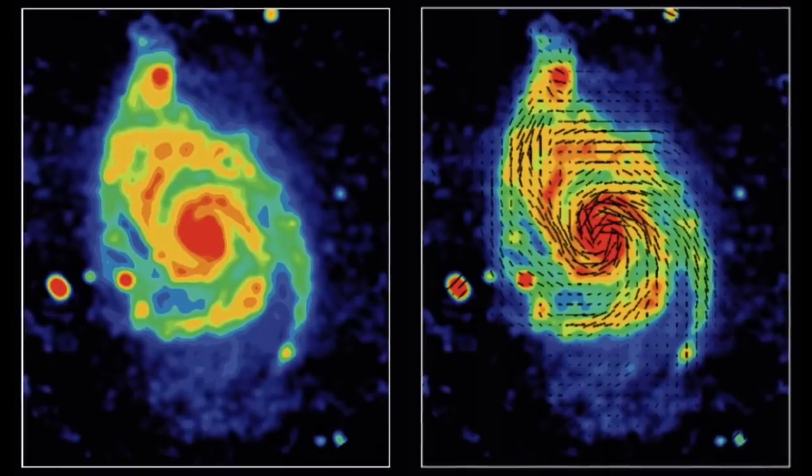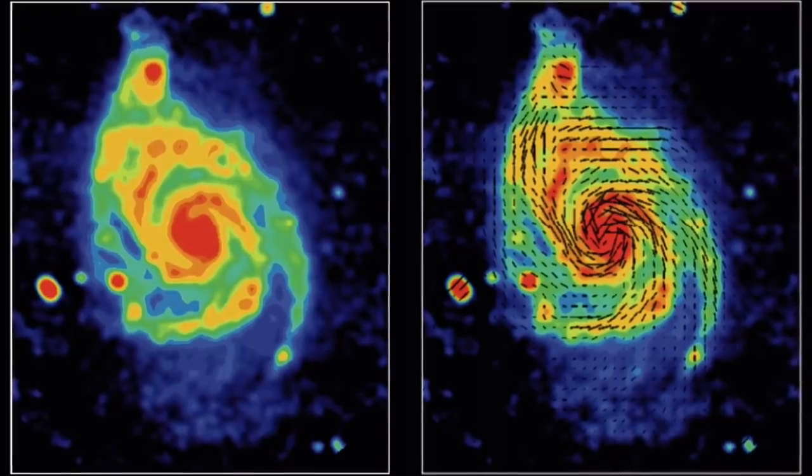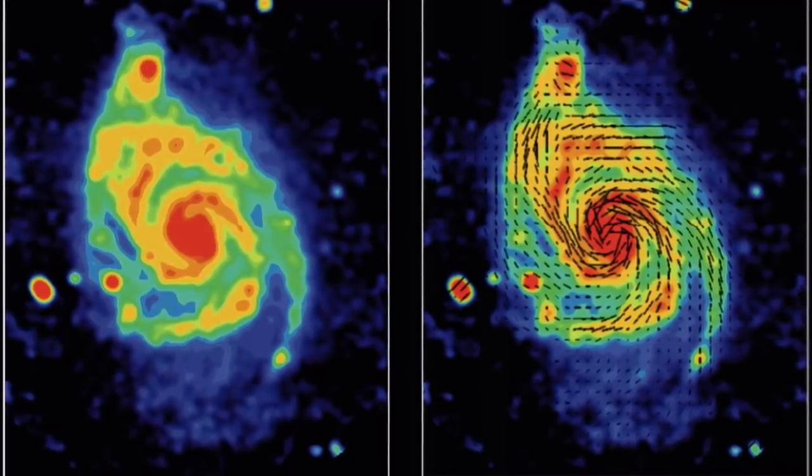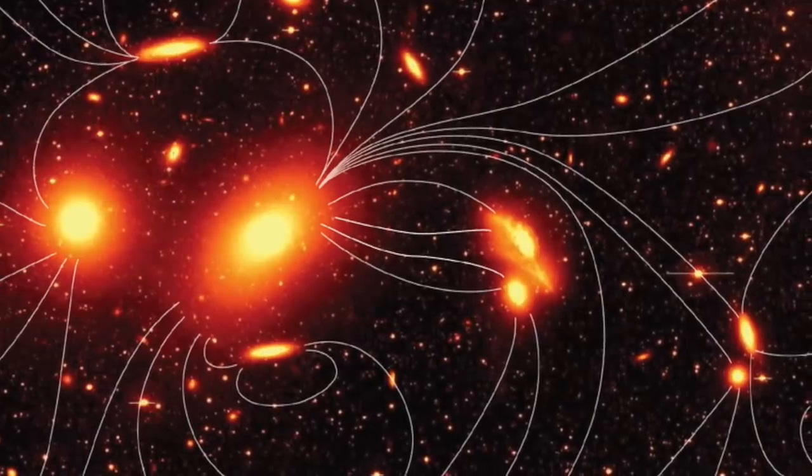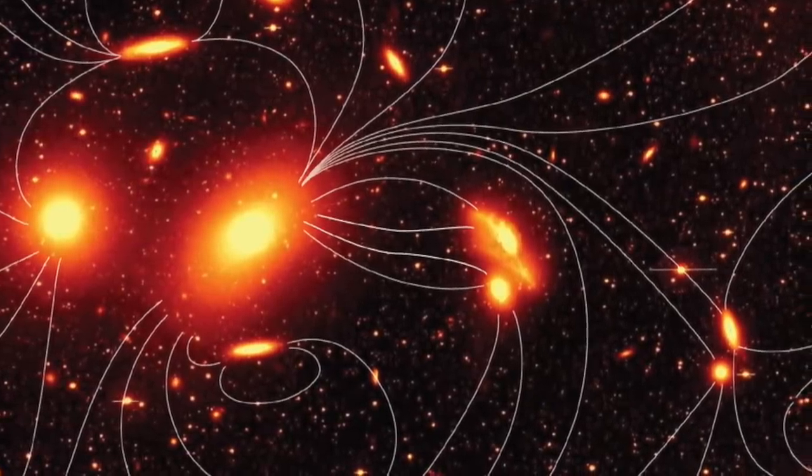Of course, as we've explained many times, the real reason cosmic magnetism is considered so inexplicable is because of most space scientists' ongoing, a priori dismissal of electric currents in the cosmos.